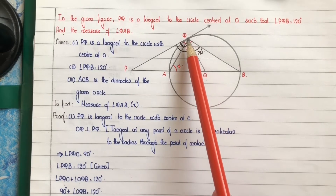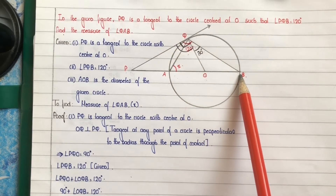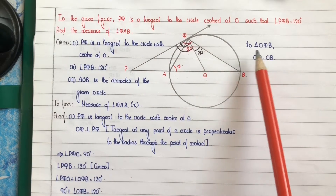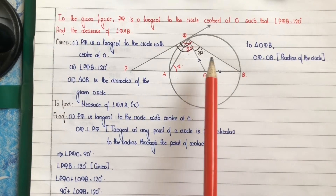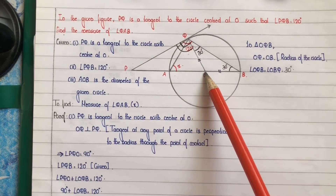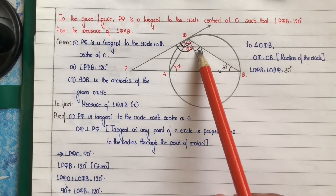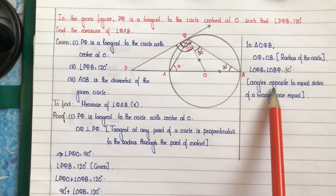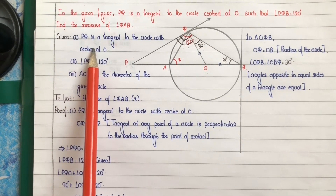Now consider triangle OQB. Since O is the centre of the circle, OQ and OB are both radii of the circle, so their lengths are equal. That is, in triangle OQB, OQ is equal to OB. Reason: radius of the circle.